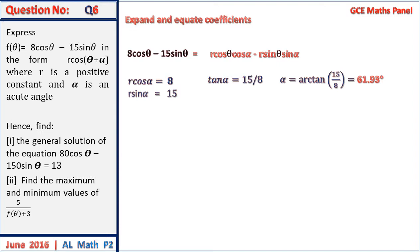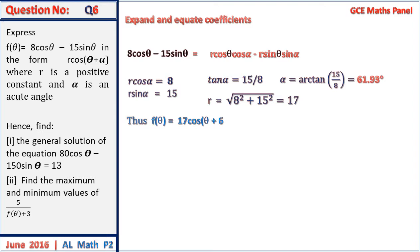The angle α is arctan(15/8), giving us 61.93 degrees. L will be equal to the square root of 8² + 15², giving us 17. We can then express f(θ) as 17·cos(θ + 61.93°), which is an acute angle.